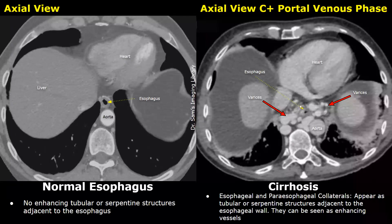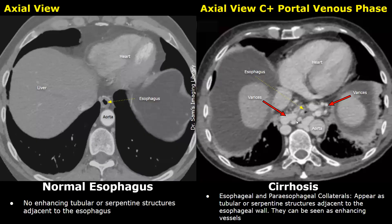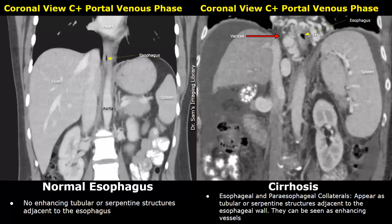Cavernous transformation is the formation of collateral vessels around the portal vein. Due to cirrhosis, many tubular enhancing serpentine collateral vessels form around the portal vein during the portal venous phase. The hilum becomes crowded with these vessels. Collateral vessels are also present near the stomach — these are called gastric varices. Collateral vessels can also form around the esophagus — these are called esophageal and paraesophageal collaterals. They appear as tubular or serpentine structures adjacent to the esophageal wall. You can see many enhancing round and tubular structures surrounding the esophagus. These collaterals are more clearly visible in the coronal plane.